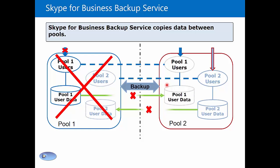Once the administrator runs the Invoke-CsPoolFailover cmdlet, this will then activate the user's set of data that is on Pool 2, and now my Pool 1 users can sign in to Pool 2 with all of their modalities intact.